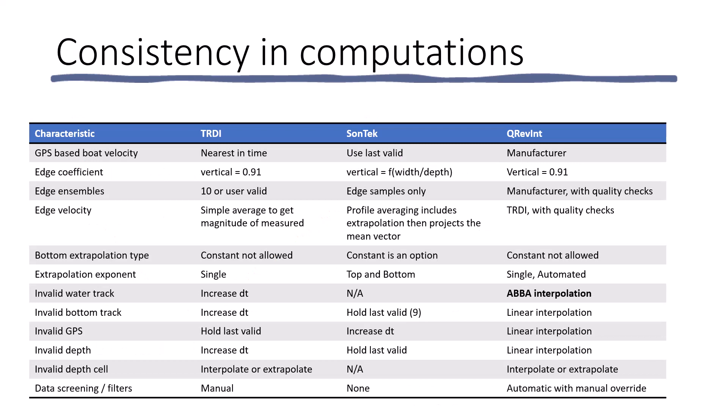So, I mentioned consistency, and you would think that you want consistency in computations. If you had the same data and you could process it both in TRDI's WinRiver 2 software and Sontek's River Surveyor Live software, you would expect that you should get the same discharge. However, when we look at the methods used by both pieces of software, we see a lot of differences, as these are shown in this table. And a couple of the major ones that I see is if you have invalid data. And what happens if you have invalid data?